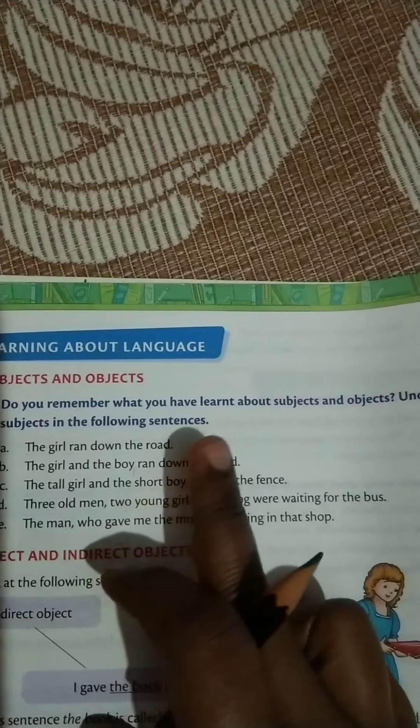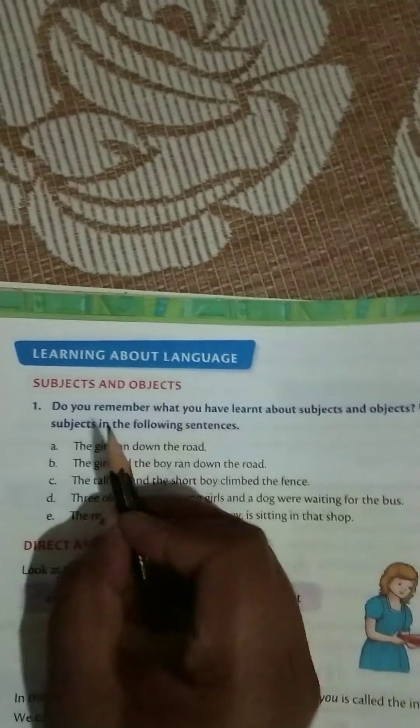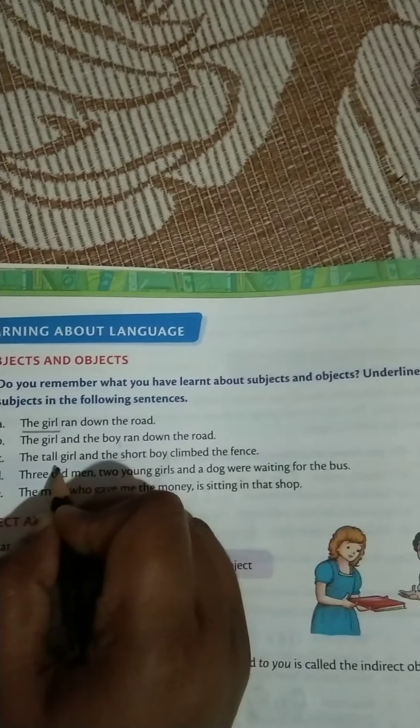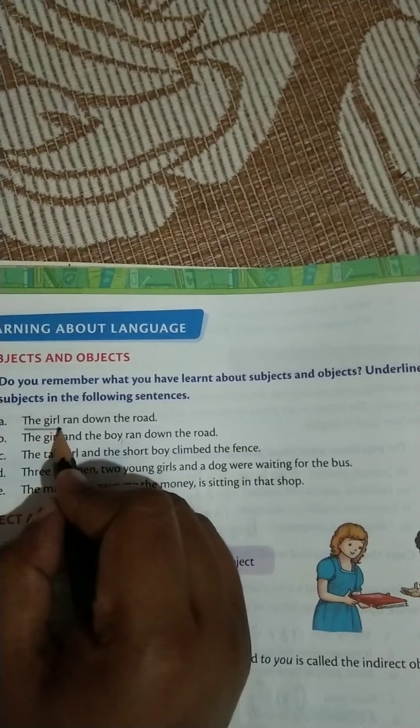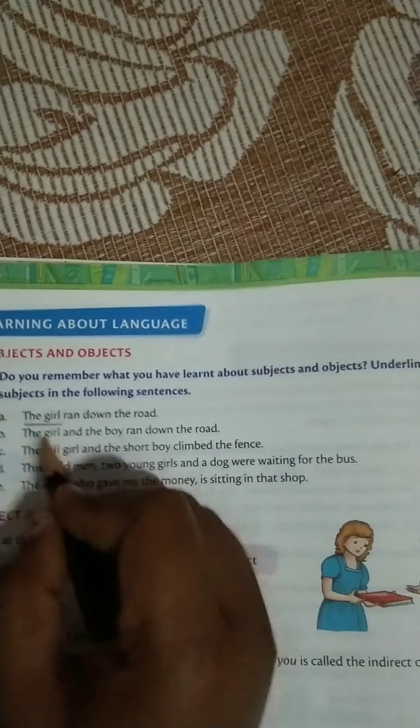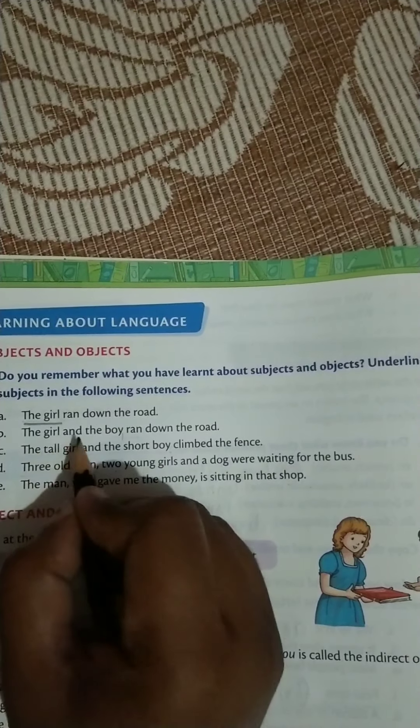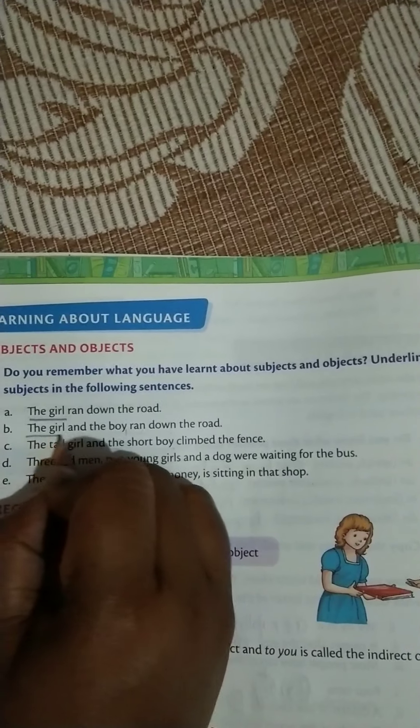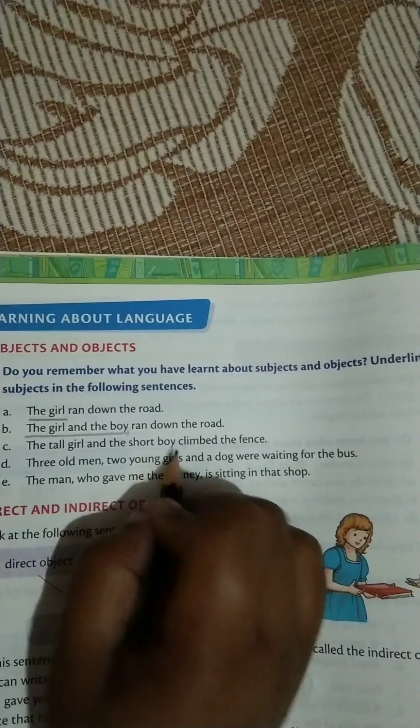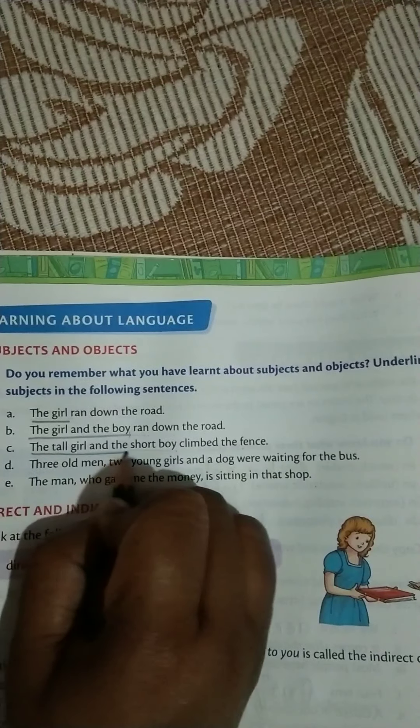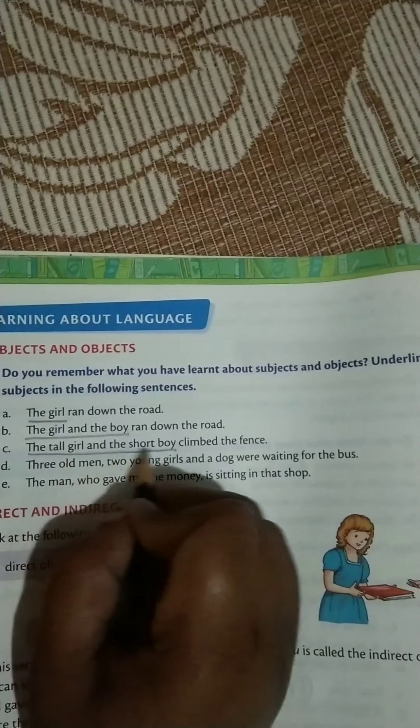Come to the next. Do you remember what you have learnt about subject and object? Underline the subjects in the following sentences. The girl ran down the road - in this, the girl is the subject. In the previous class I have told you that subject is the person who does the work. Next is, the girl and the boy ran down the road. The girl and the boy is the subject here. Next, the tall girl and the short boy climbed the fence. In this, the tall girl and the short boy is the subject.